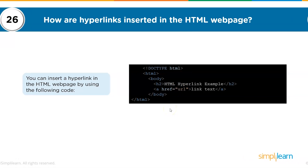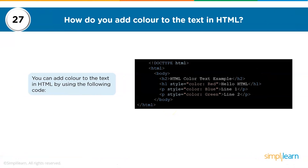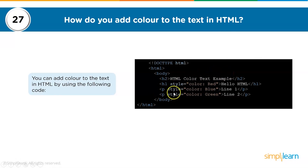The twenty-seventh question: how do you add color to text in HTML? You can add color to text using the style attribute with a color property, as shown on the right side of the screen — adding red, blue, and green color to paragraphs and headings.